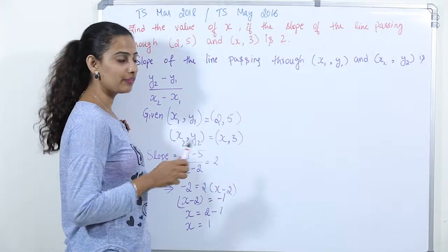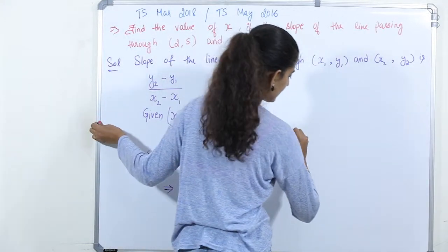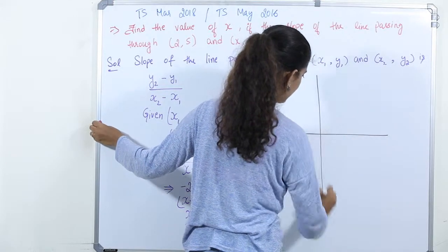Slope of the line passing through (x1, y1) and (x2, y2) - this is the x axis, this is the y axis.